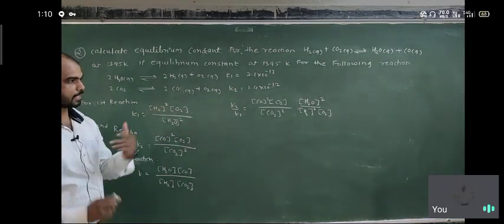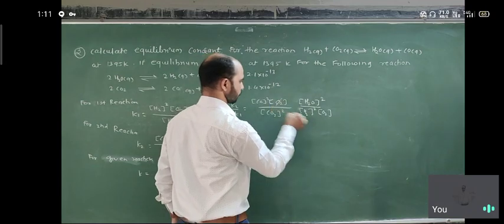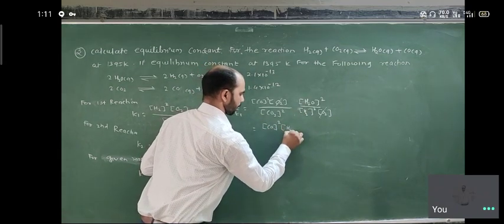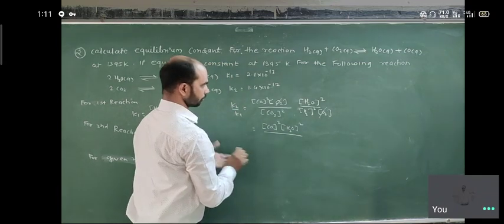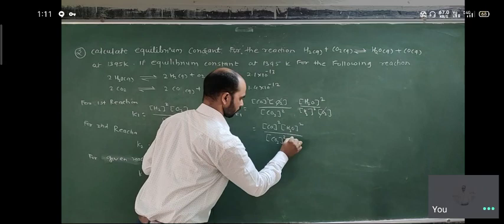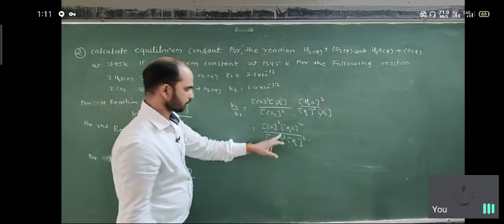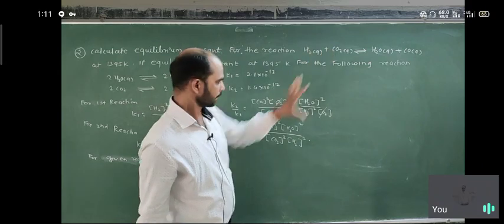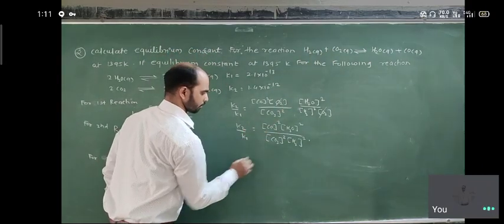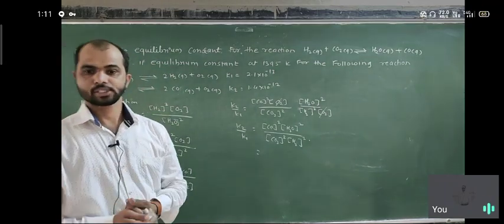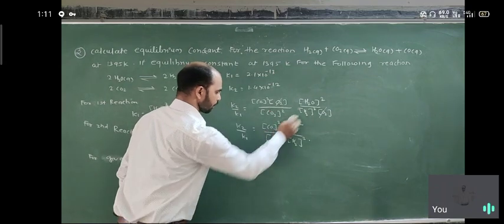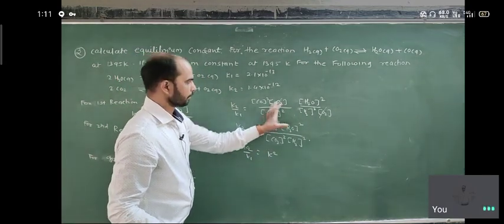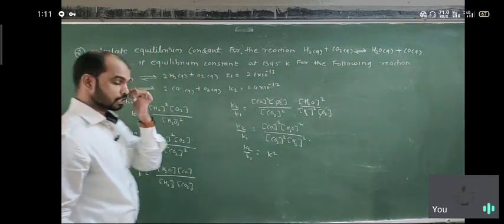We cancel the common terms in K2 upon K1. What remains is CO and H₂O as products and CO₂ and H₂ as reactants, matching the given reaction. Therefore K2 upon K1 equals K squared, because we are combining two equilibrium constants into one K squared.